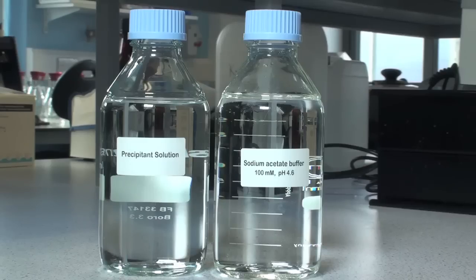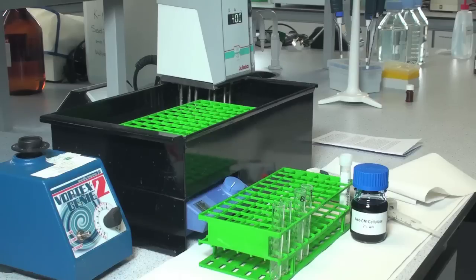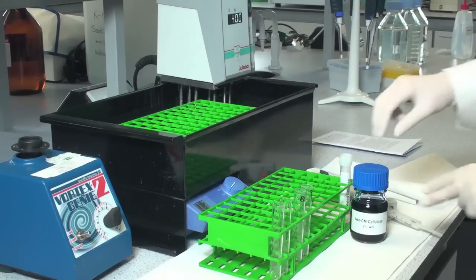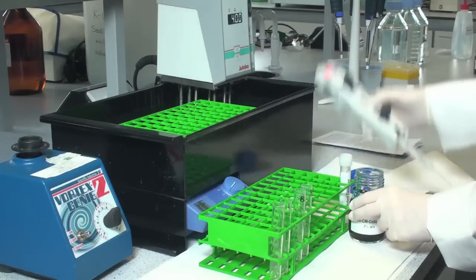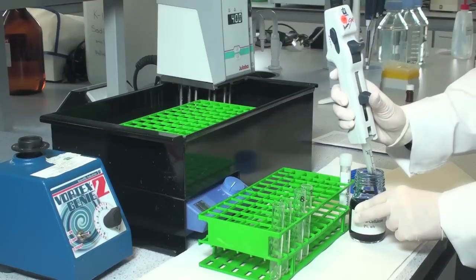Prepare the 100 millimolar sodium acetate buffer pH 4.6 as described in the manual. Add 0.5 ml of substrate solution to each of 4 tubes, 2 for the sample and 2 for the blank.